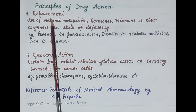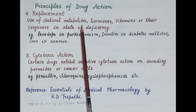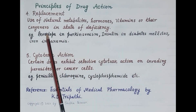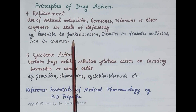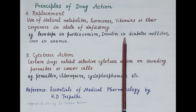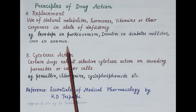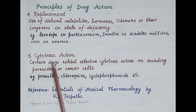Another type of drug action is replacement — the use of natural metabolites, hormones, vitamins, or their congeners in states of deficiency. For example, levodopa is used in Parkinsonism, insulin is used in diabetes mellitus, and iron is used in iron deficiency anemia.